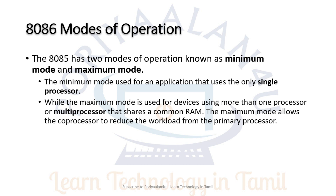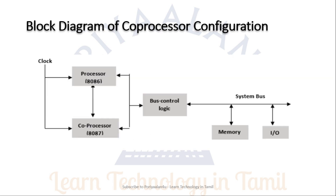The 8086 has two modes of operation: Minimum mode and Maximum mode. In Minimum mode, you can use a single processor. In Maximum mode, you can use a co-processor or multiple processors. In Maximum mode, there is shared RAM between the two processors, and both work with the same clock.